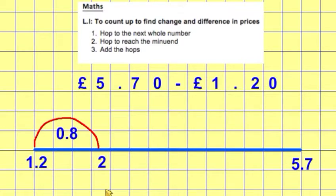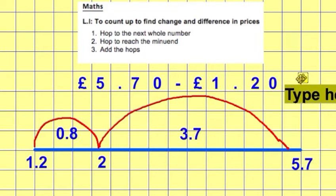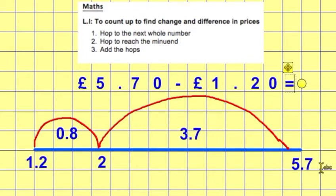Then I jump to the other end, going from 2 to 5.7. Think about the whole number: 2 to 5 is a jump of 3, and then we add the 0.7. So I make that bigger jump — that is a jump of 3.7. And then, as we've been doing all week, all I need to do is add the hops, and that will give me my answer. So 0.8 and 3.7 is 4.5.